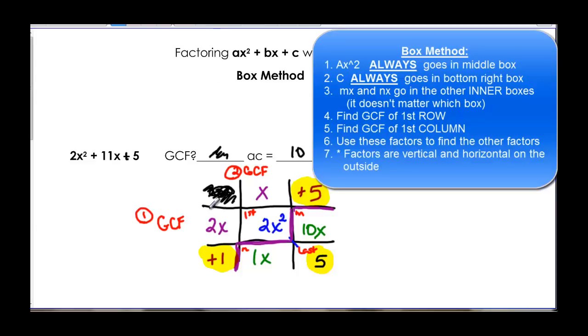Our factors are going to be on the outsides of the box, the purple in my case. So it factors to 2x plus 1 and x plus 5.